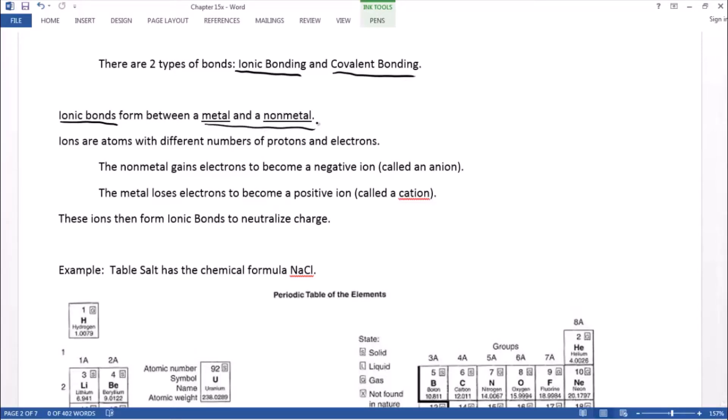Quick little definition here. Ions are atoms with different numbers of protons and electrons. So they're going to have a net charge. They'll either have more electrons than protons, so they'll be negative. Electrons are negative. Yeah, more of them, they're negative. Or they're going to have fewer electrons than protons, and then they'll be positive.